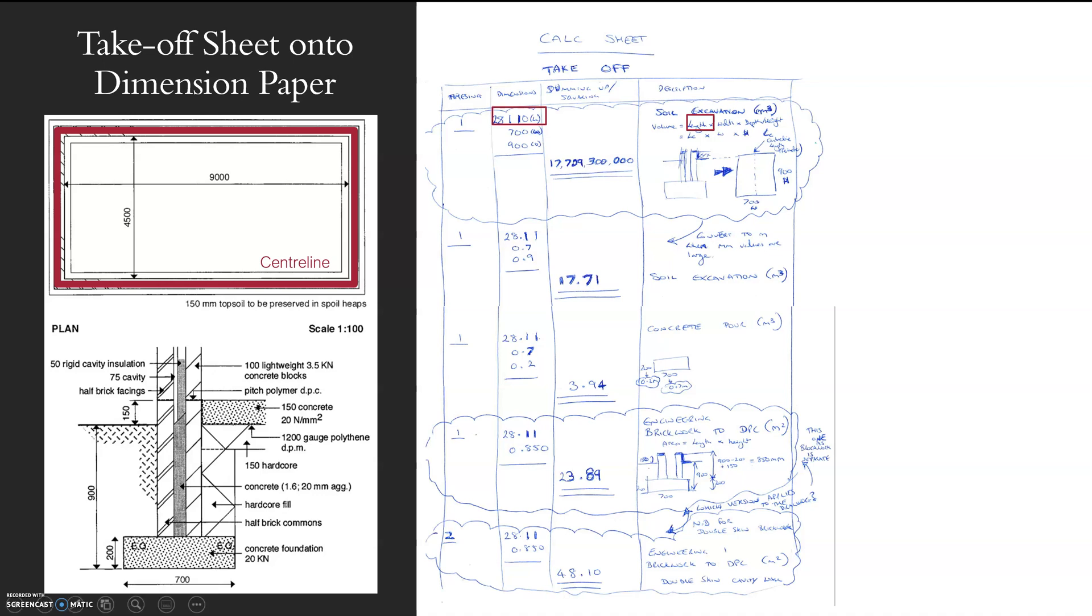First up, I'm looking at my dimensions. My soil excavation is going to be a volume, so I need a length, a width, and a depth. If you have a look there, I've put them all in millimeters and I end up with 17 million millimeters cubed.